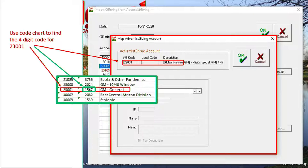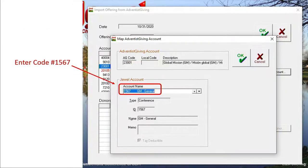This Adventist Giving account may or may not already be in JEWEL. If it is, we need to find it and map it to this account. If it's not already in JEWEL, we need to create it so that it can be mapped. Now we can enter code 1567 in the JEWEL account name box, and we see that it is already in JEWEL, since the correct account name appears.